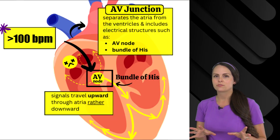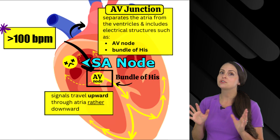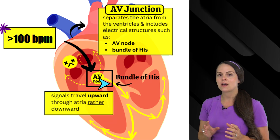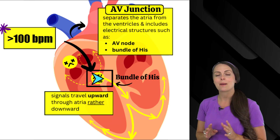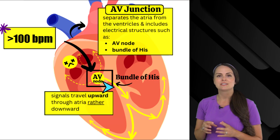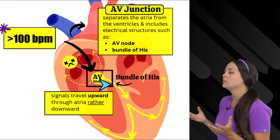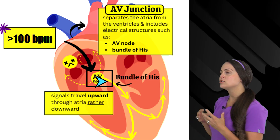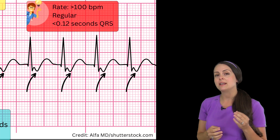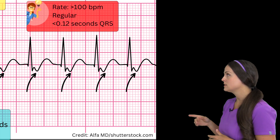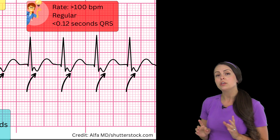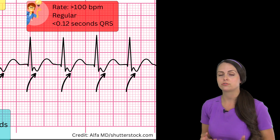Now let's talk about how the ECG waveform looks in junctional tachycardia. The SA node is no longer the primary pacemaker — the electrical structures in the AV junction are. These structures are sending out signals extremely fast, and the rate will be greater than 100 beats per minute. As electrical signals travel down through the ventricles, they do so normally — just very fast — going through all those electrical structures and causing ventricular depolarization. So you will see a narrow QRS complex of less than 0.12 seconds, a normal QT interval, and a normal T wave. When measuring R wave to R wave, the rhythm will be regular.